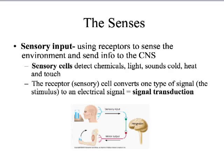The last part of this lecture covers the senses — specifically the sense of vision. Sensory input uses receptors to sense the environment and send that information to the CNS, up the spinal cord into the brain. Sensory cells detect chemicals, light, sound, cold, heat, or touch. The sensory receptor cells convert one of these types of stimuli to an electrical signal — this is called signal transduction, which means turning one type of signal into another.